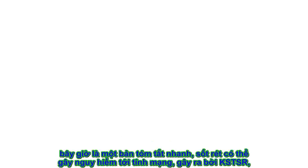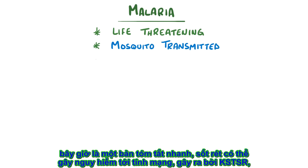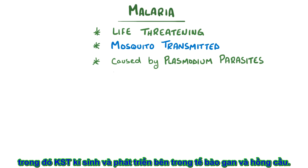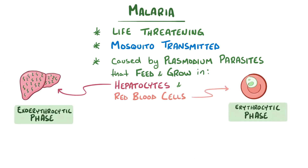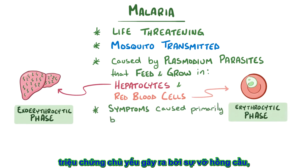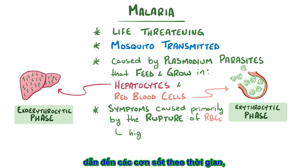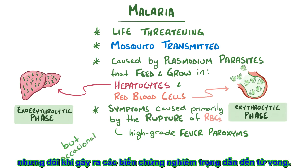As a quick recap, malaria is a life-threatening mosquito-transmitted infection caused by plasmodium parasites in which the plasmodium feeds and grows inside hepatocytes and red blood cells. Symptoms are primarily caused by the rupture of red blood cells that usually result in high-grade fever paroxysms that improve over time, but can occasionally cause severe complications and death.